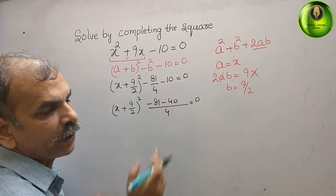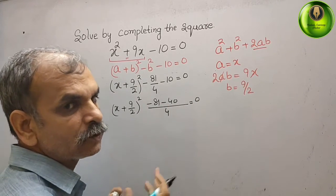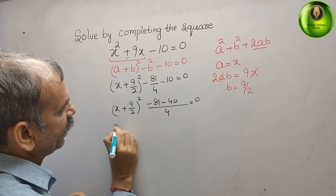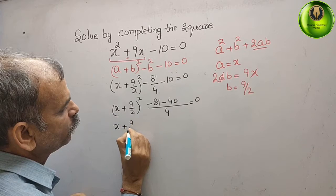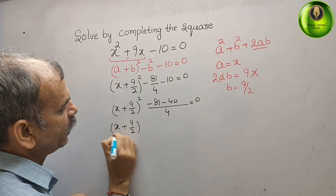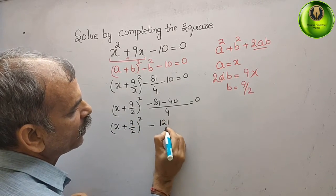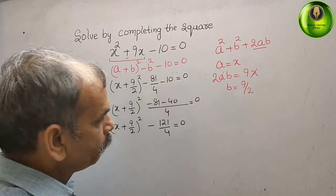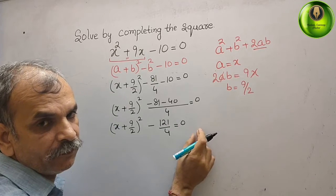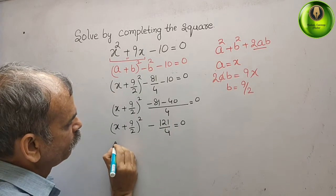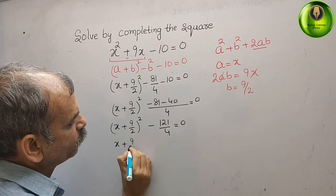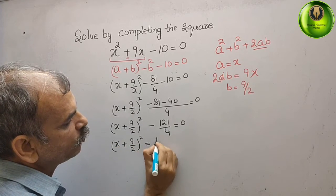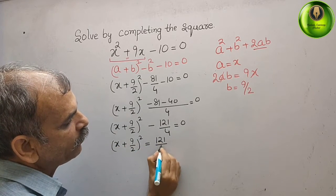81 and 40 — what is the sum? 81 plus 40 is 121. So we get (x + 9/2) whole square minus 121 by 4 equals 0. Bring 121 by 4 to the right side, so (x + 9/2) whole square equals 121 by 4.